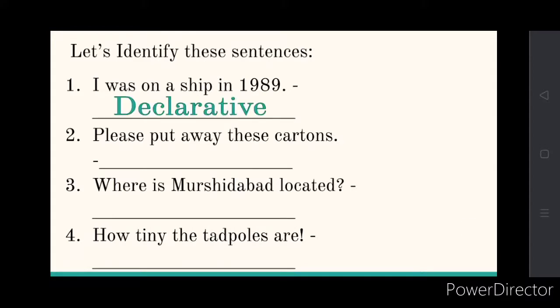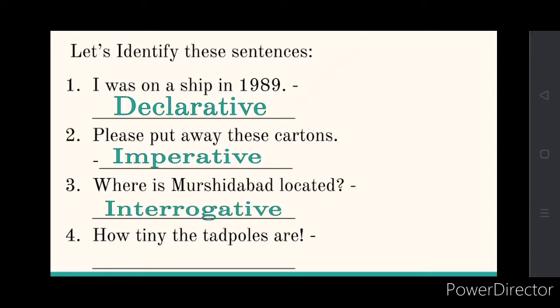The second one is 'please put away these curtains.' This is a request — I am asking you to do something — so it is an imperative sentence. The third one is 'where is Murshidabad located?' This is clearly a question with a question mark at the end, so it is an interrogative sentence.